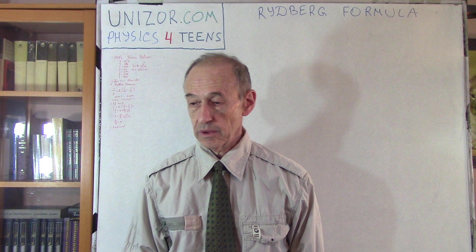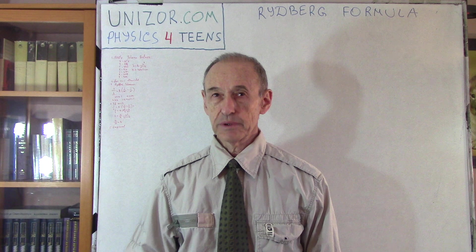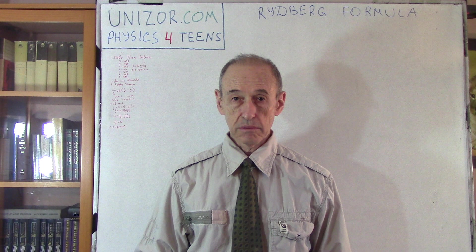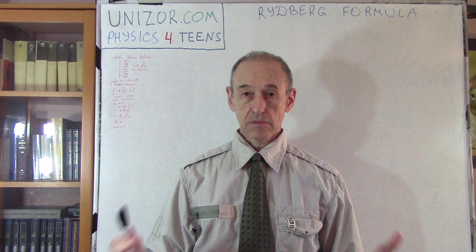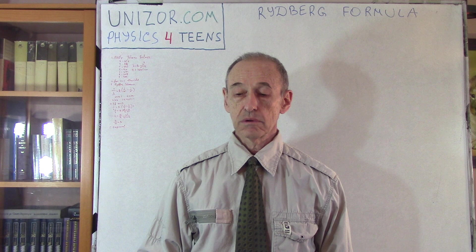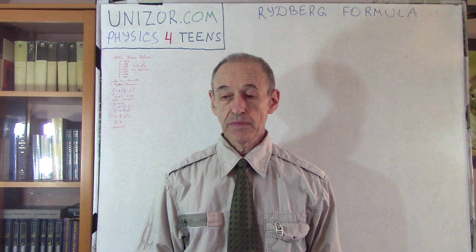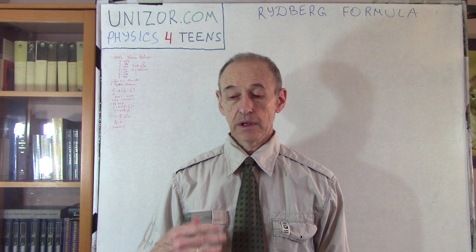We are right now at the end of 19th century, like 1880 something, 82 maybe. People did know at that time about electromagnetic fields. Maxwell equations have already been published and generally accepted. Light is the oscillations of electromagnetic field. That was the general opinion at that time. And people were actually studying how light behaves under different circumstances.